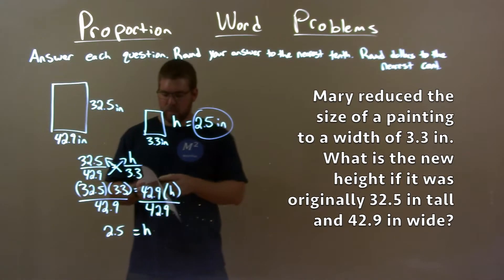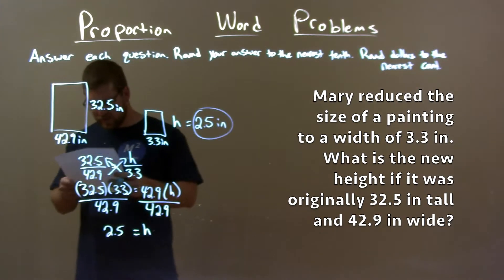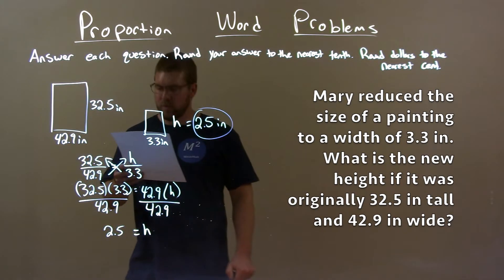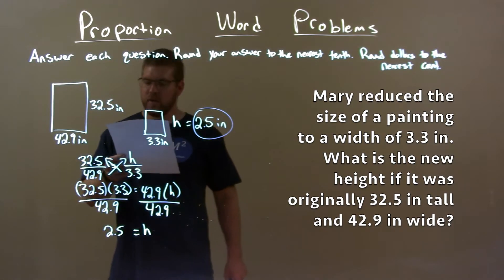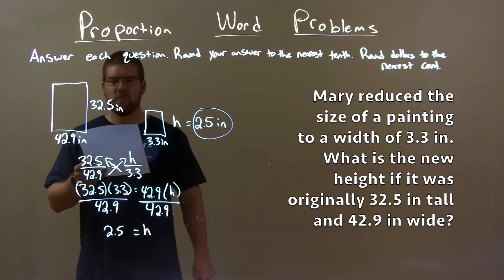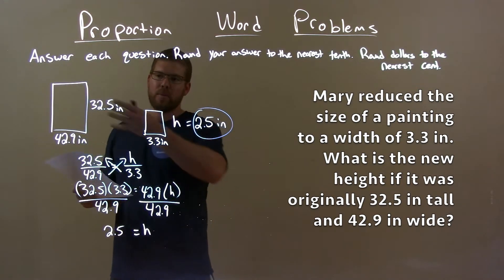So quick recap. We're given the problem: Mary reduced the size of a painting to a width of 3.3 inches. What is the new height if it was originally 32.5 inches tall and 42.9 inches wide? Well, we set up a proportion here.